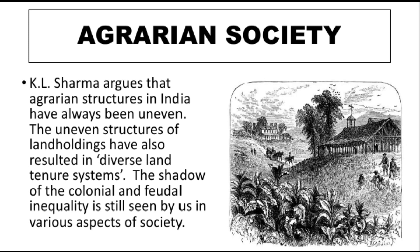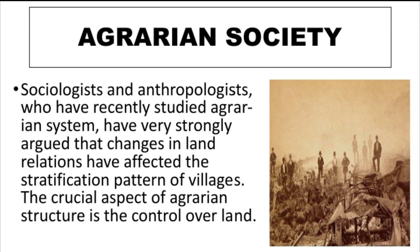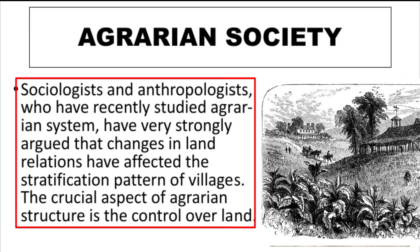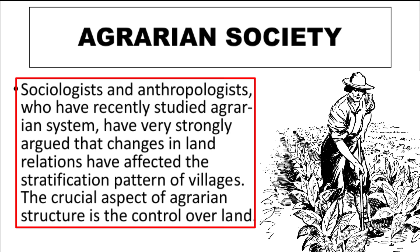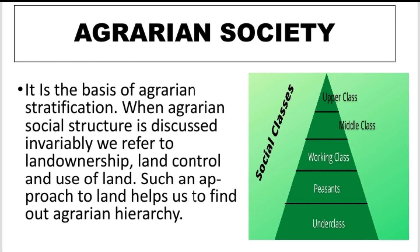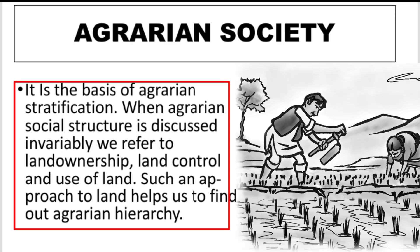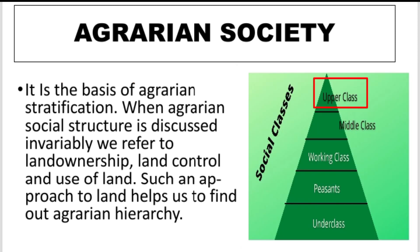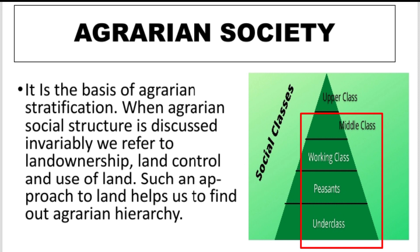Anthropologists have studied the agrarian system and strongly argue on the change in land relationships and their effect on stratification patterns. A crucial aspect of agrarian structure is control over land, as it acts as the basis of agrarian society. When we discuss the agrarian system, we refer to land ownership, land control, and land use, which help us identify a hierarchy.